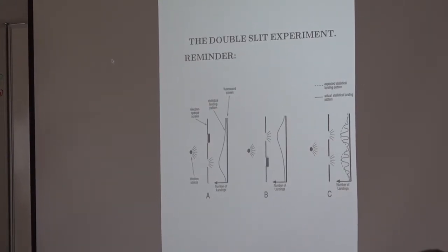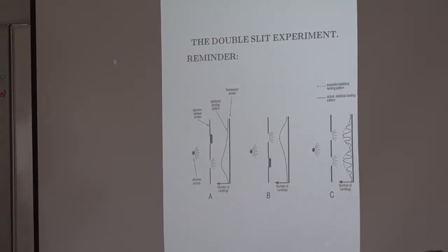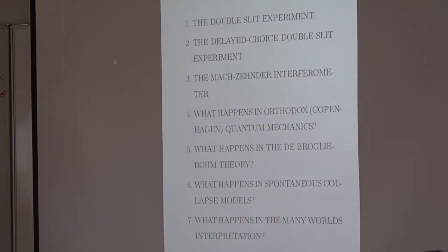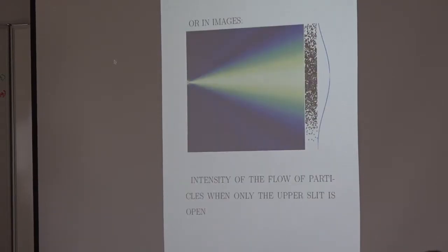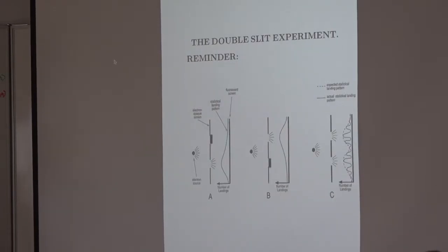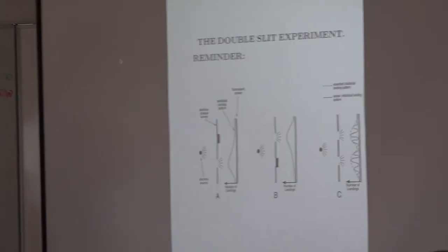And then I want to discuss how you see that in orthodox quantum mechanics, in the de Broglie-Bohm theory, in the spontaneous collapse models, namely GRW, and then in the many-worlds interpretation. I have lots of material and I hope you don't mind me skipping some.